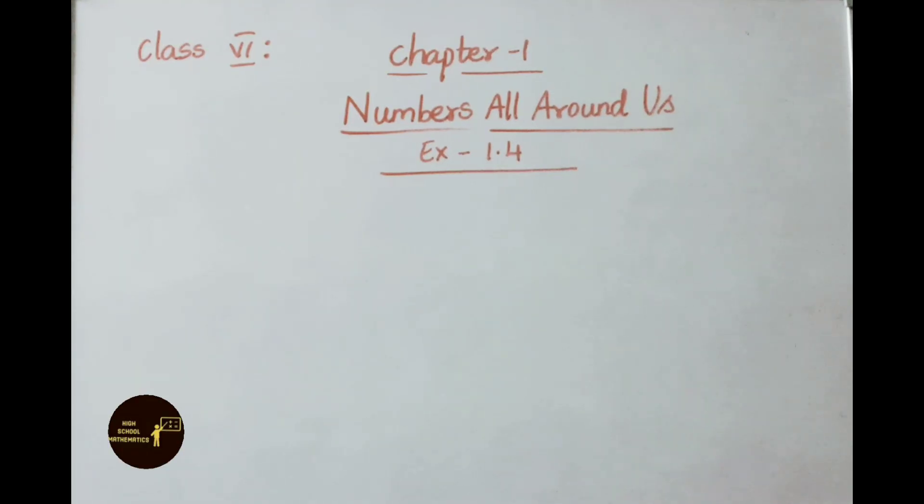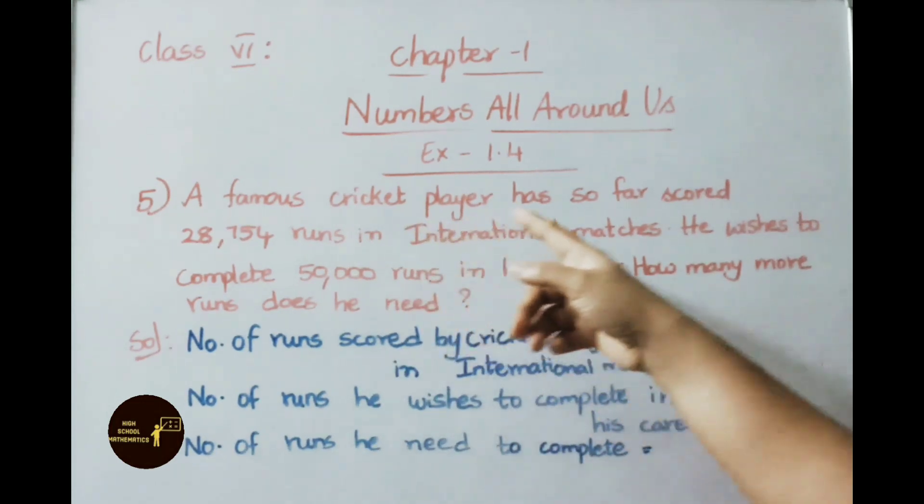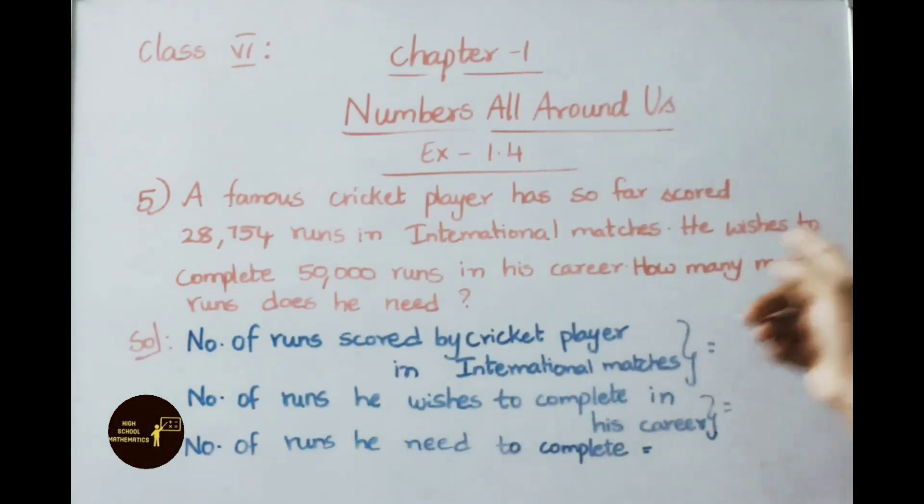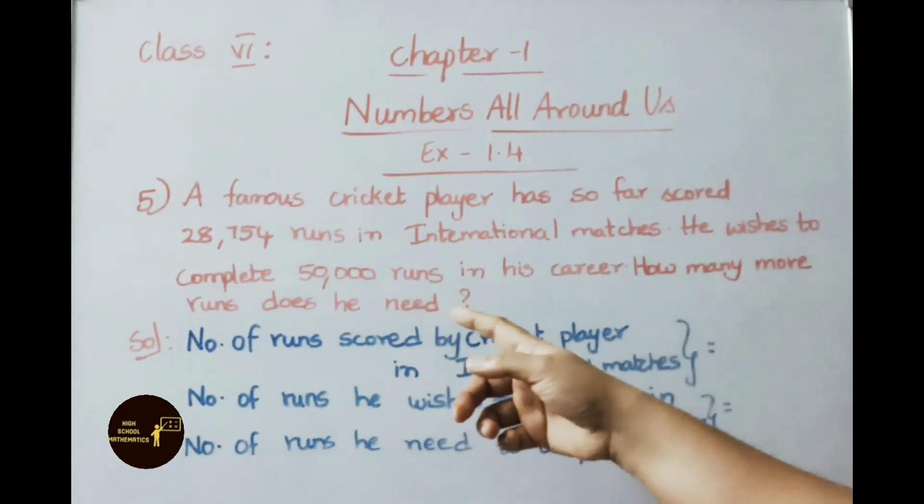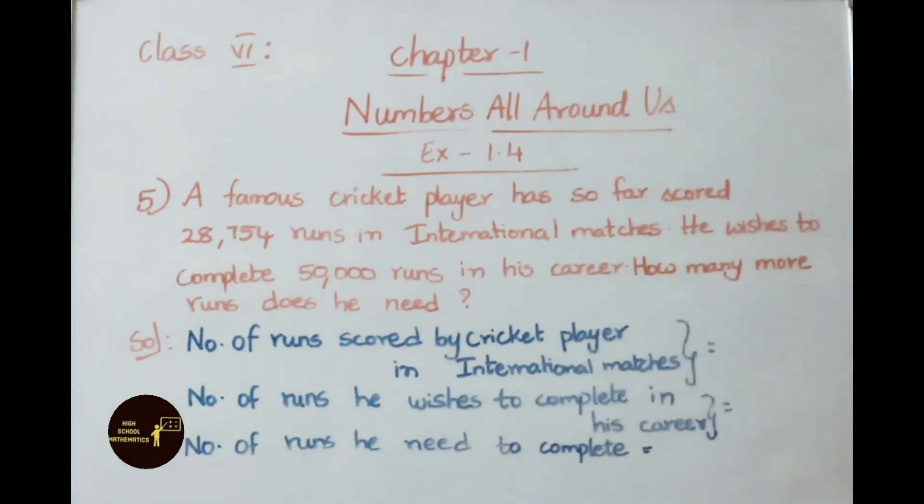Hello everyone, welcome to High School Mathematics Channel. Today we are going to learn Class 6, Chapter 1, Numbers All Around Us, Exercise 1.4, fifth sum onwards. Let us see the sums. Fifth sum: A famous cricket player has so far scored 28,754 runs in international matches. He wishes to complete 50,000 runs in his career. How many more runs does he need?